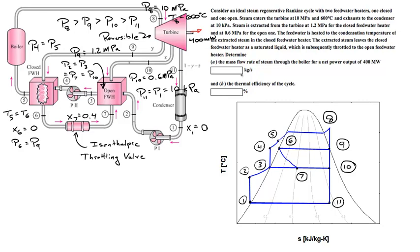For part B you're asked to find the thermal efficiency of the cycle. If you solve part A, part B is relatively straightforward — the thermal efficiency is just 1 minus Q_out over Q_in. Here's the TS diagram for this process; I won't draw it out since we covered it in class. Let's make sure you understand how it corresponds to this process. Let's start at point 1, the entrance to the pump.